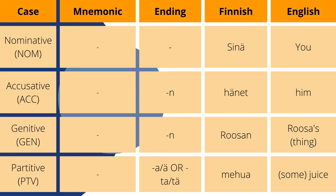The genitive case is used to show possession and is used with postpositions in Finnish as well. Additionally, it can be used to show necessity and it can also mark an object of a sentence whenever the verb or action is happening to the whole object as opposed to a part of the object. The case ending is -in and the example word is a variant of the name Rosa. So Rosan means Rosa's, meaning Rosa's thing — Rosa owns this thing.